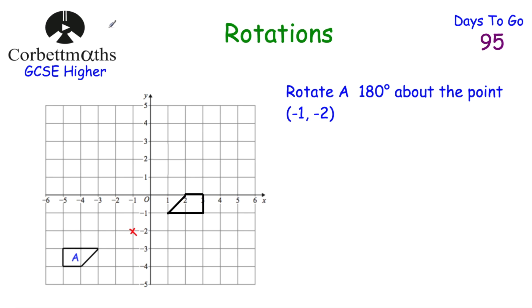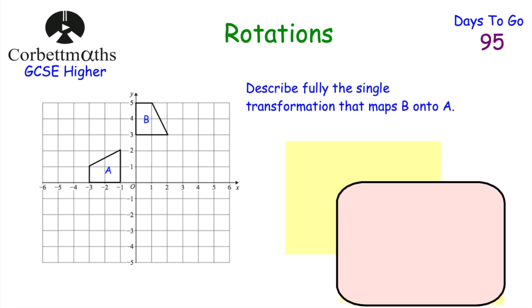Now let's look at one where you've got to describe a rotation. Here we've got shape A and shape B — both trapeziums. We've been asked to describe fully the single transformation that maps B onto A. Pause the video and see if you can describe that transformation. First of all, let's say it's a rotation — so it has been rotated.